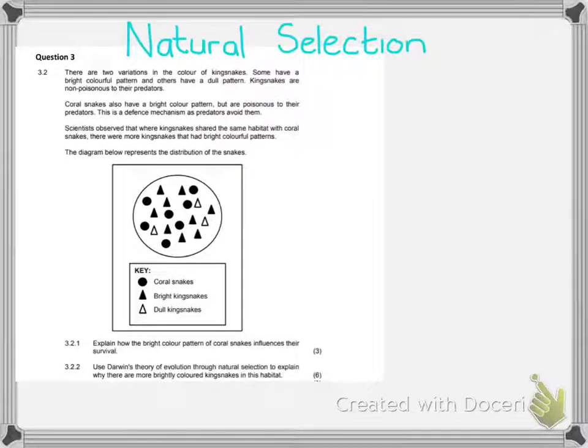So I selected this question because I thought it was a great example of what you should expect in the final exam. The guideline says that you need to know, in particular, one example of natural selection, whether it be the Galapagos finches, the tortoises, the baobabs, the proteas. But the trick is that they can actually ask you any animal or plant.